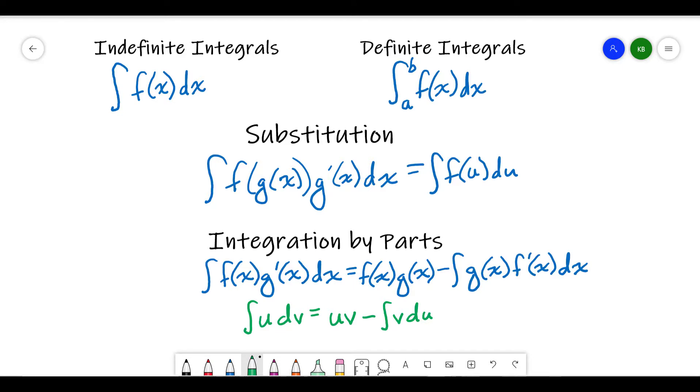Now if we do have those bounds of integration, the a and the b that are present on the integral sign on the definite integral, then we don't need that constant because we've already found it using those bounds of integration. So those integration bounds a and b, they need to be numbers. That's one thing to remember along the way.